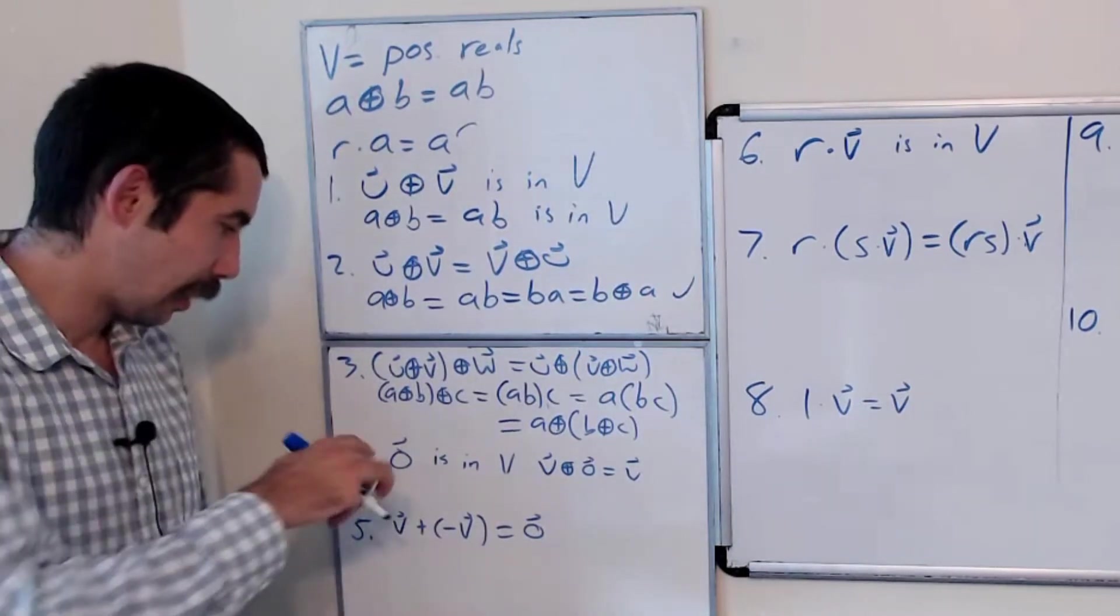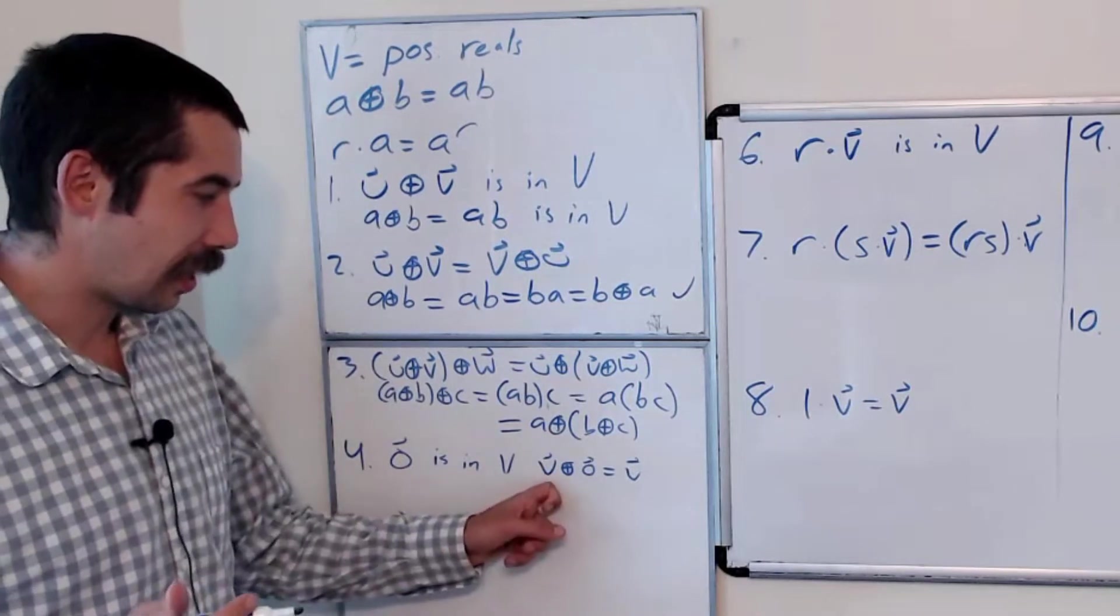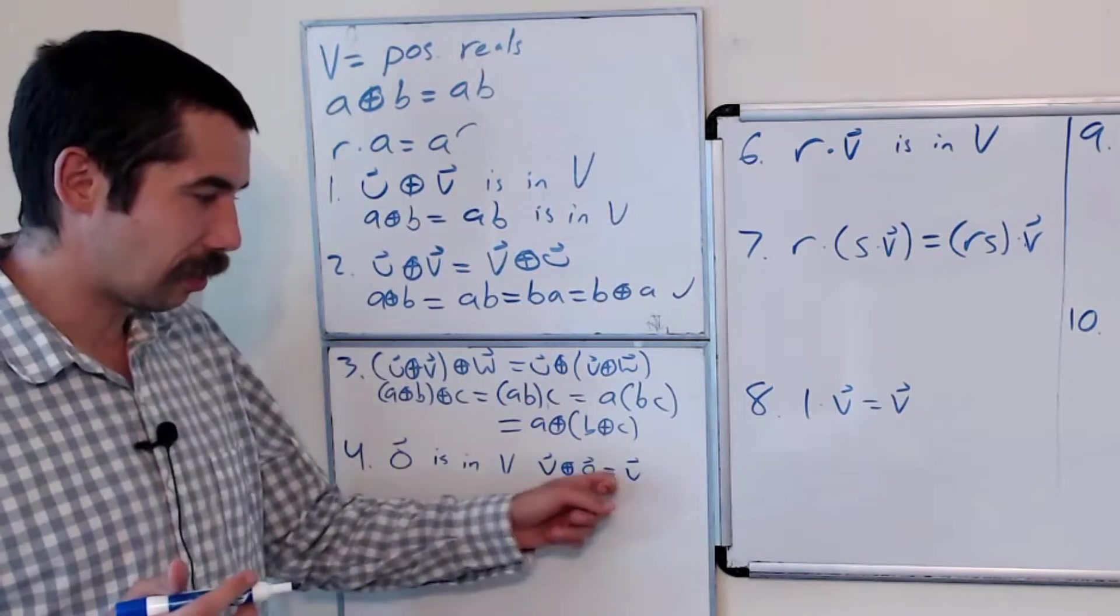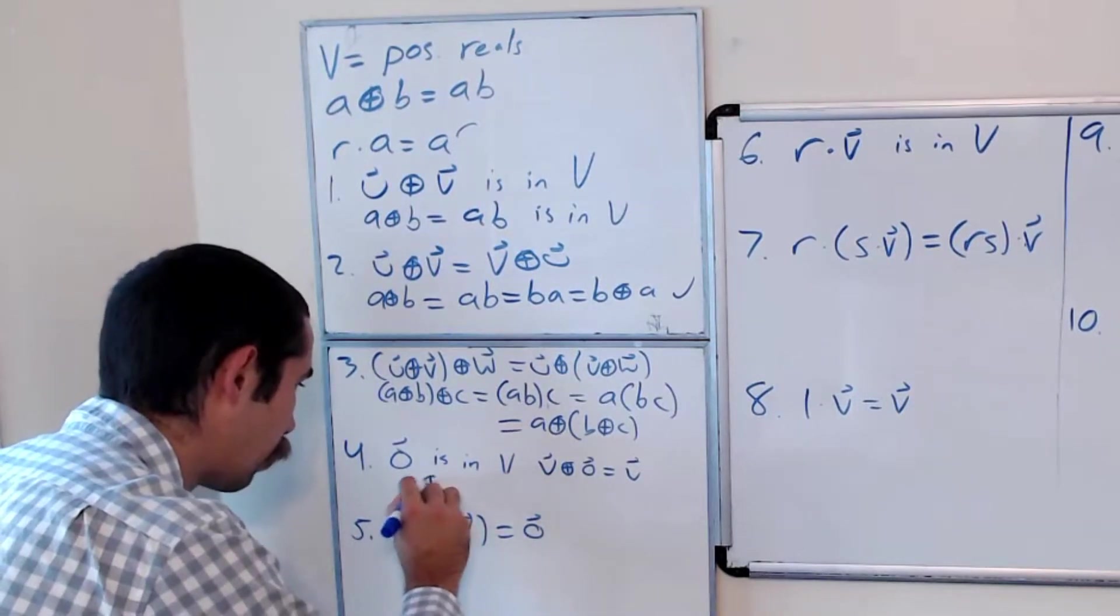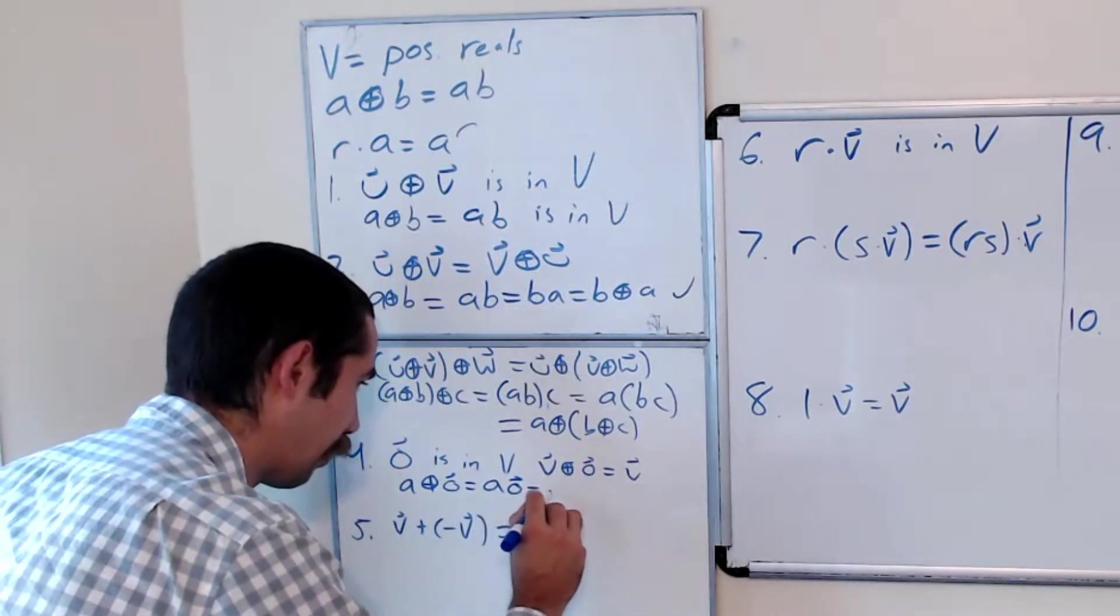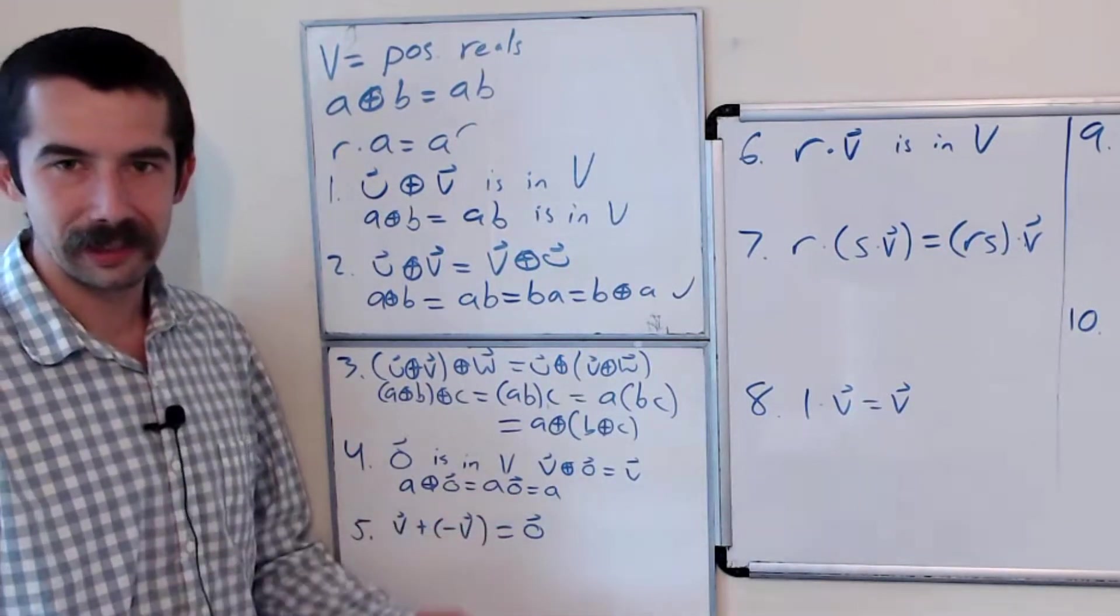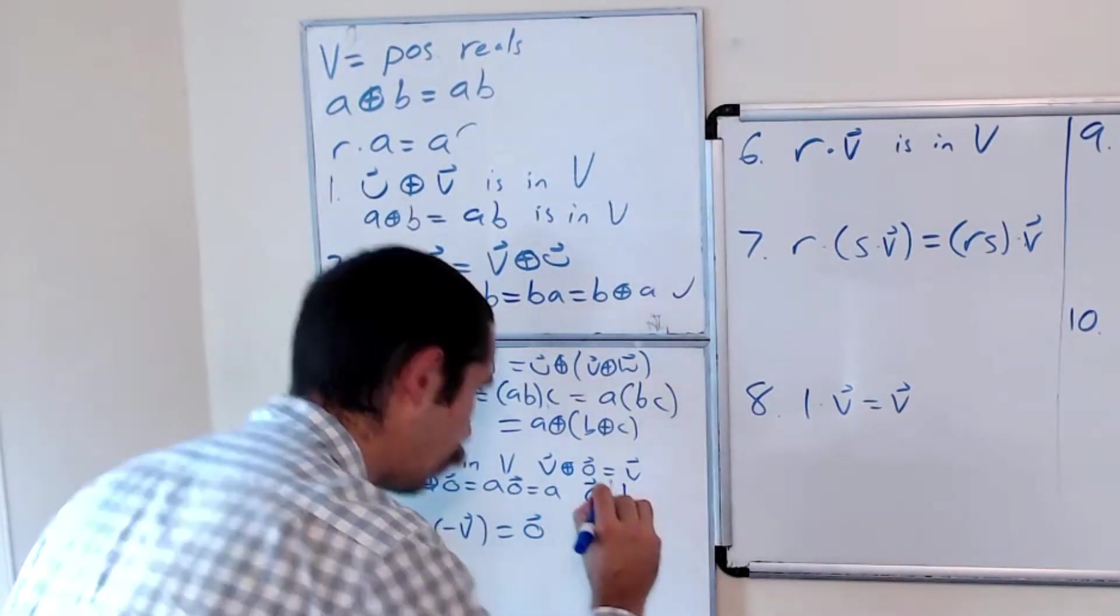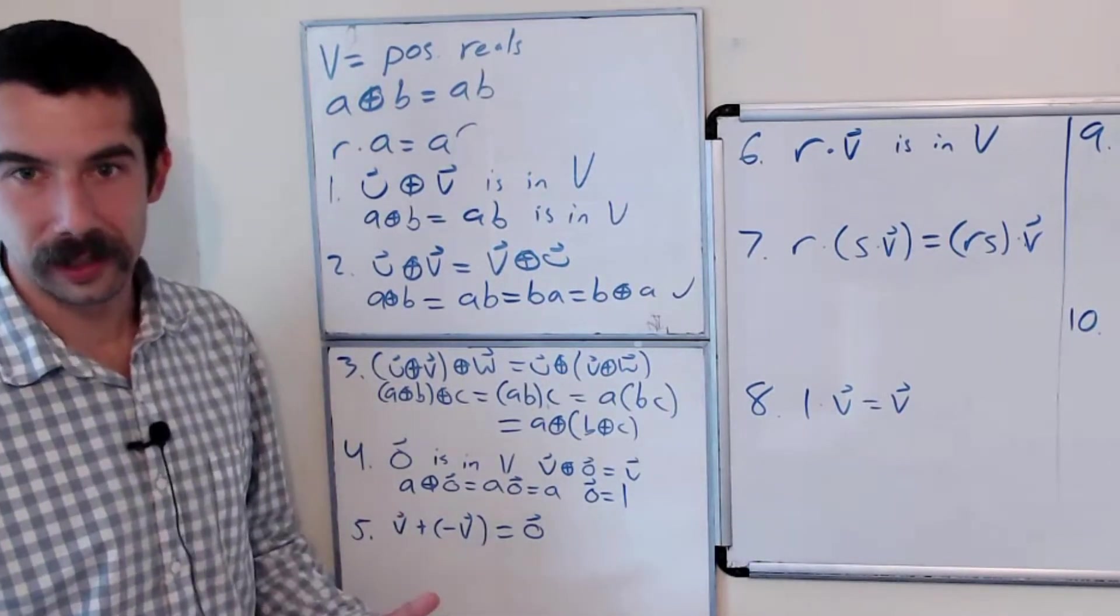Condition four is that there's a zero vector in our set. That is a vector when you add by that vector, you get what you started with. So V plus zero gives us V. So a positive real number plus this zero vector should give us—well, we know it's equal to A times the zero vector, but it should give us A. And so what number has the property if you multiply by it, you get what you started with? The number one. And the number one is a positive real number. So our zero vector is in V.